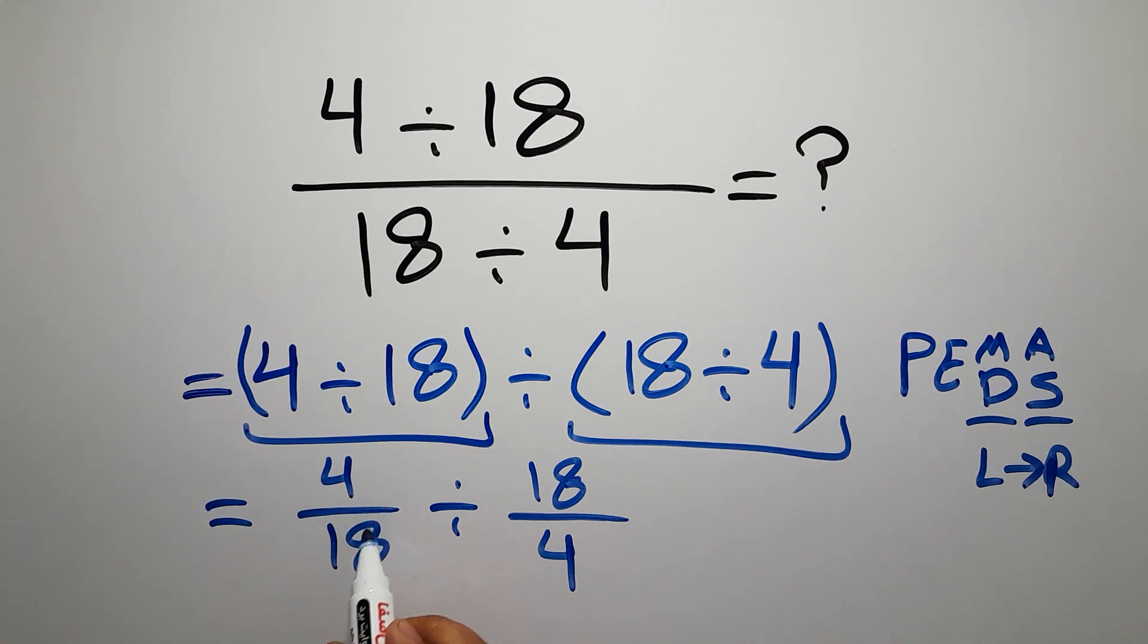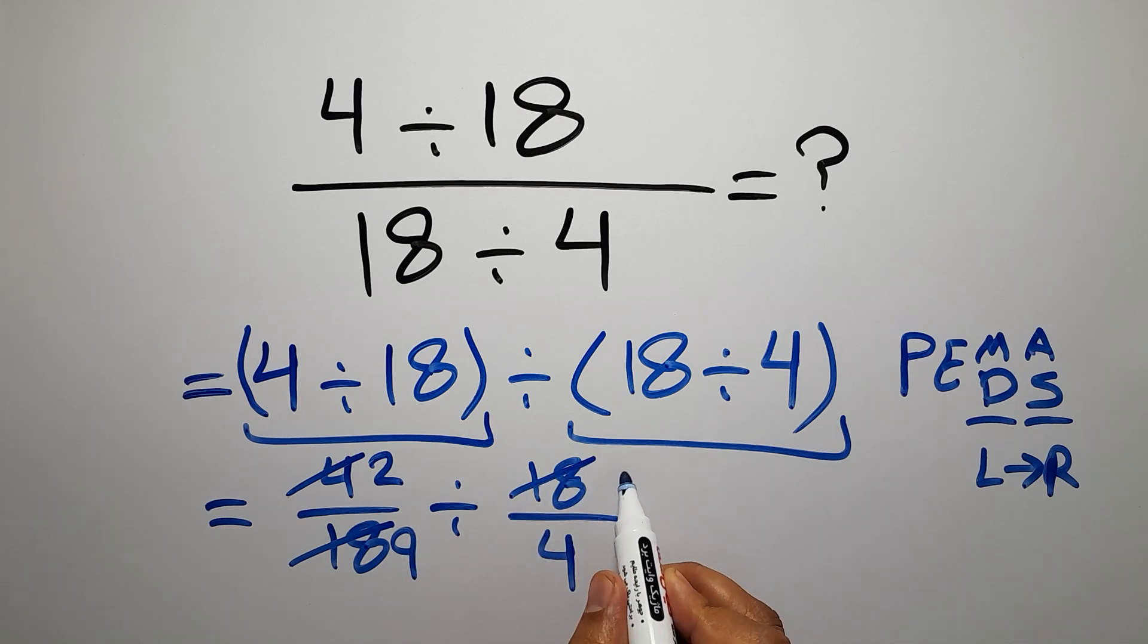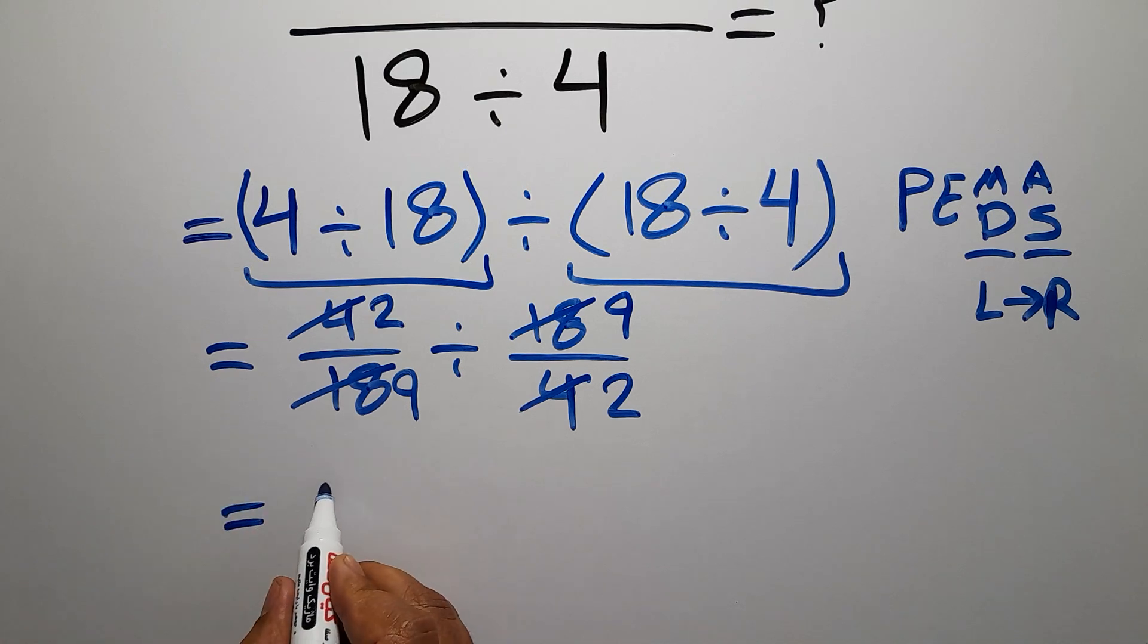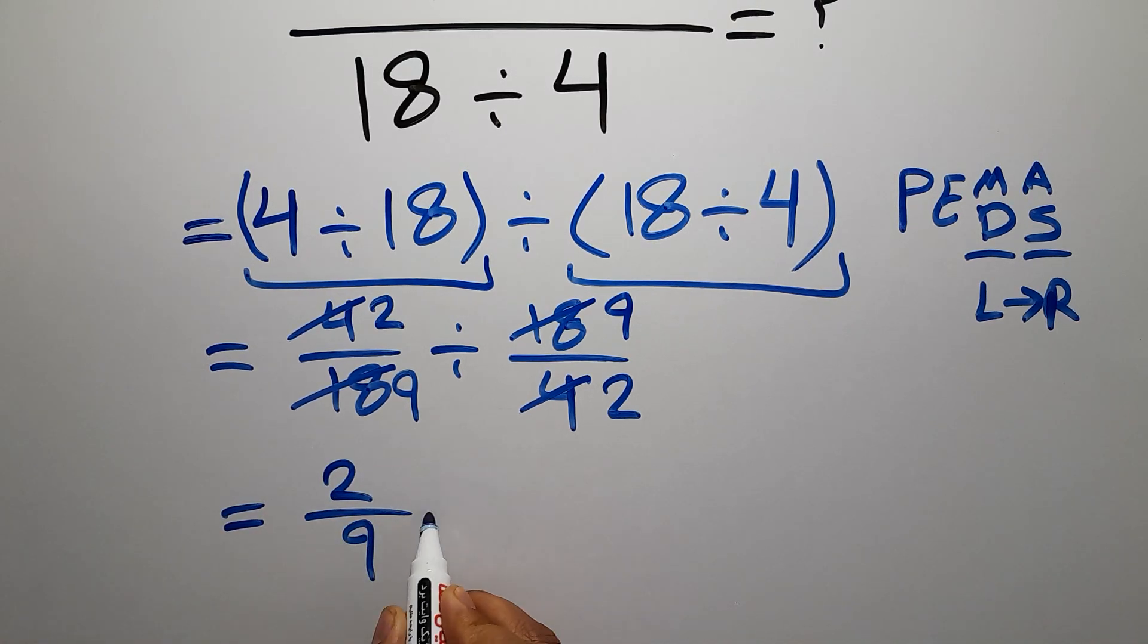Let's simplify this fraction. 4 divided by 2 gives us 2, and 18 divided by 2 gives us 9. Here we have 18 over 4. 18 divided by 2 gives us 9, and 4 divided by 2 gives us 2. So we have 2/9 ÷ 9/2.